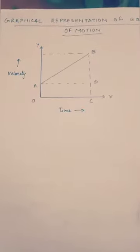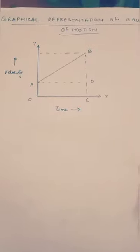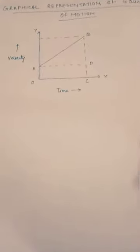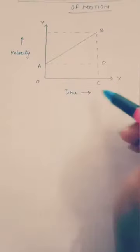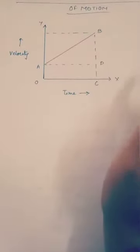Now we will start with the graphical representation of the equations of motion. Since this is a graphical representation, we have to draw a graph first. I have drawn a graph with velocity on the Y axis and time on the X axis.